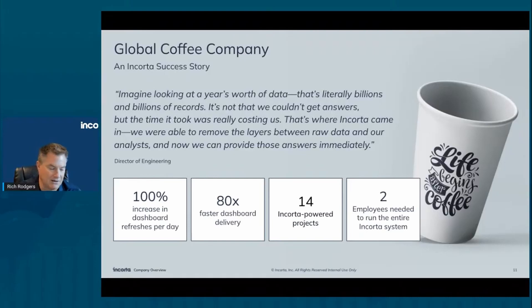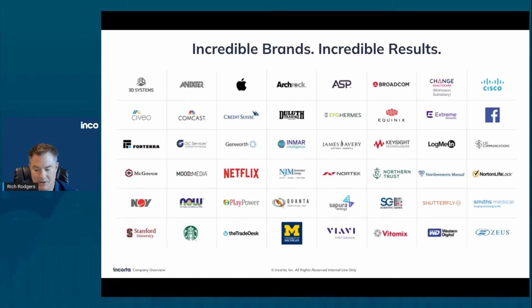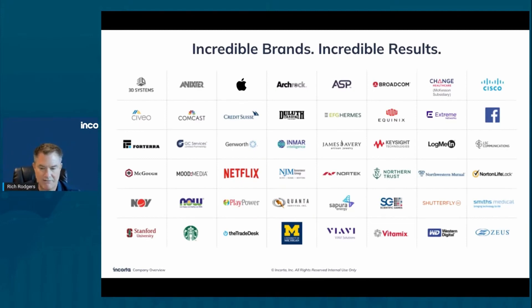These are big companies, but we have companies of all sizes. One of the great things about being on the cloud is that you can start small and scale. With our cloud solution, you can elastically scale — literally with the press of a button, increase the size of the infrastructure supporting Encorta. You can see some of our customers across all different industries and sizes, including global companies across the United States, Europe, Asia-Pacific, and the Middle East.